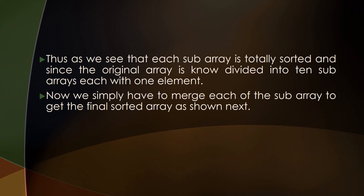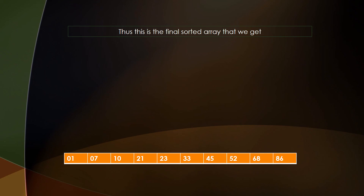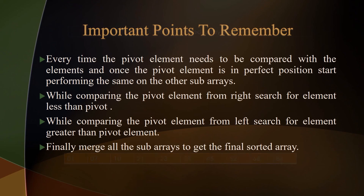We simply merge each of the subarrays to get the final sorted array. Important points to remember: the pivot element must be compared with every element, and once the pivot is in its perfect position, the comparing and swapping process must be performed on the remaining subarrays as well. When comparing from the right, search for an element less than the pivot; when comparing from the left, search for an element greater than the pivot. Finally, once each subarray contains only one element, merge all subarrays to get the final sorted array.